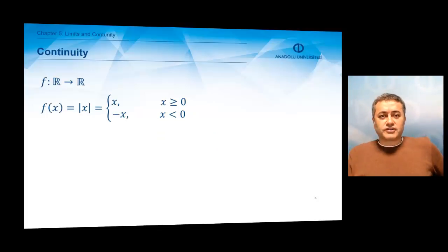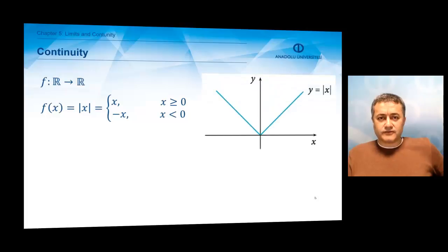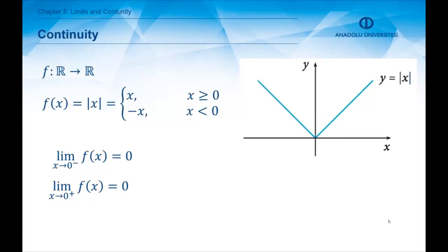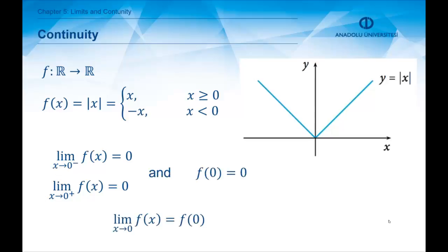Let us consider this very famous function, the modulus of x — the absolute value of x — which is x when x is greater than or equal to 0, and minus x when x is less than 0. We are trying to understand whether this function is continuous. Just by looking at the graph, the function is continuous to the right and to the left of x equals 0, but there is a corner at x equals 0. Checking: the function has value f(0) equals 0, the left limit is 0, and the right limit is 0. So the limit of f at 0 is 0, which equals the value of the function. Therefore, f is continuous at x₀ equals 0.